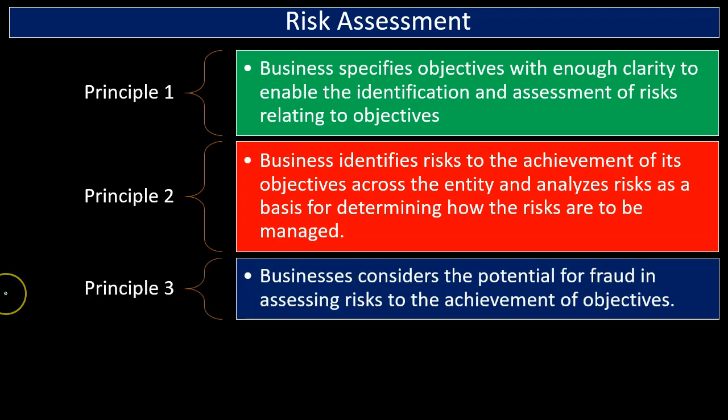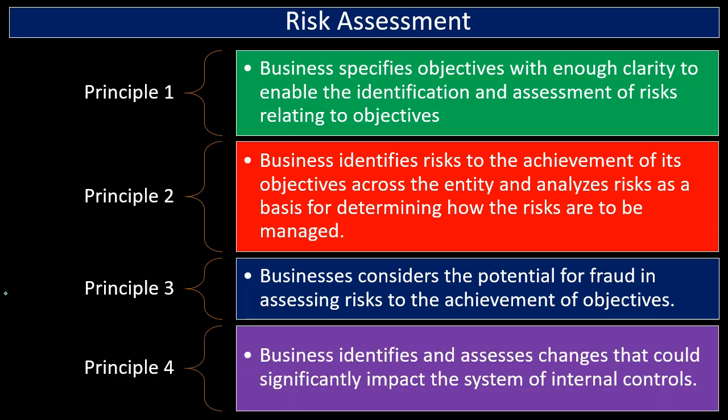Principle three: the business considers the potential for fraud in assessing risks to the achievement of objectives. We want to set up an environment within the organization to lessen the likelihood of fraud. First we identify what the risks of fraud are — some apply to any organization, some are specific to the type of organization — then we put in policies and principles to mitigate them.